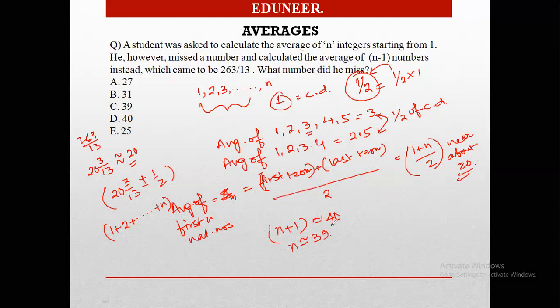So since the guy has missed one number, and the average came out to be 263 by 13, the denominator being 13, which means that the number of terms after missing one number must be a multiple of 13. After missing out that number, the number of terms has to be a multiple of 13. So the nearest multiple of 13 around 40 is 39. So n minus 1 equals 39, which means that there were 40 numbers or 40 terms that he was asked to find initially.